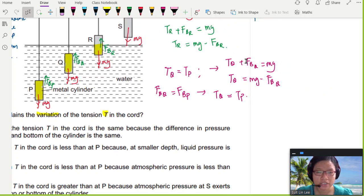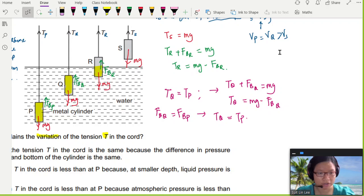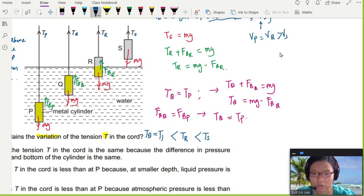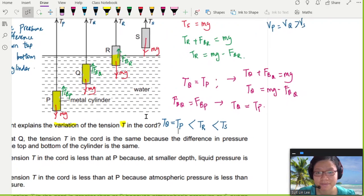If you want to arrange the tension or to summarize everything, the tension is equal to mass subtract buoyancy force. So the largest tension is TS. TS is the biggest because it doesn't have buoyancy force to support. Followed by TR. TR is the second biggest because the buoyancy force is less. And followed by TQ and TP, which are equal because they displace the same amount of water. Although they are immersed at different heights, they will have the same pressure difference.